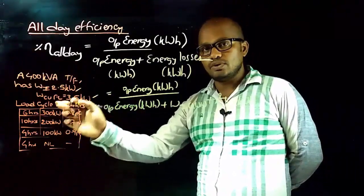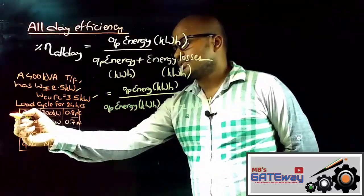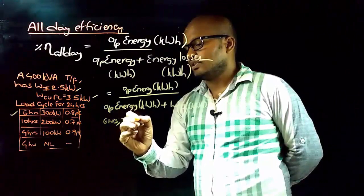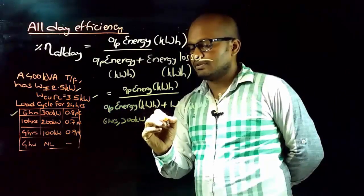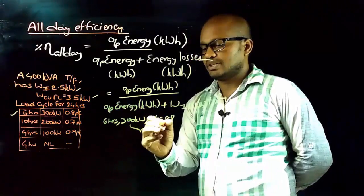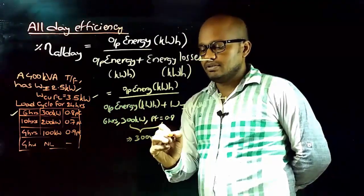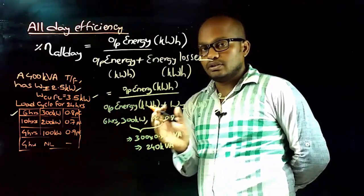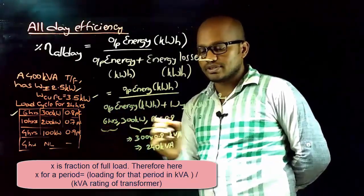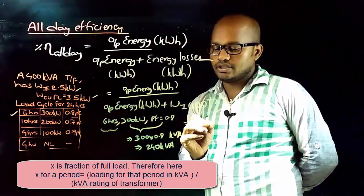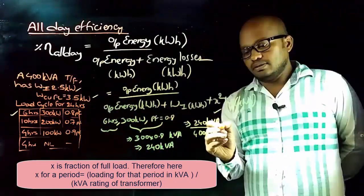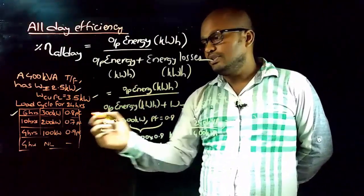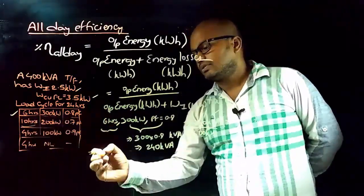Consider the first row: 6 hours at 300 kilowatts with a power factor of 0.8. Multiplying gives 300 divided by 0.8, which equals 240 kVA. Therefore, the loading on the transformer for these 6 hours is 240 kVA divided by the transformer rating, giving x equal to 0.9375.